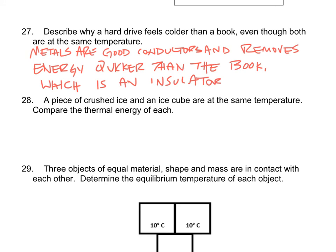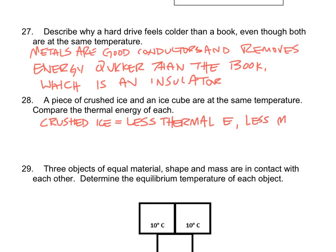Number 28: a piece of crushed ice and an ice cube are at the same temperature — compare their thermal energy. Thermal energy depends on the amount of matter or mass of the object. Crushed ice is very small and has fewer particles than an ice cube, so it has less thermal energy. The ice cube has more mass and more molecules moving around, therefore it has more thermal energy.